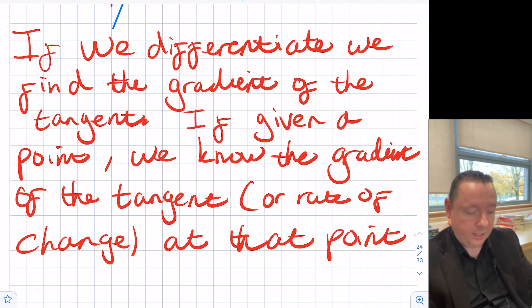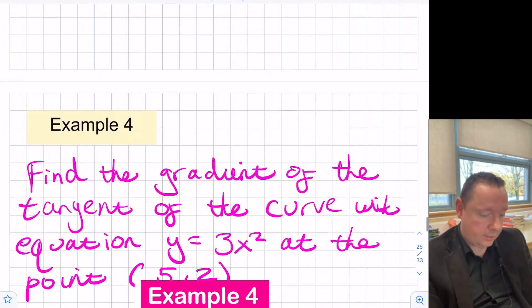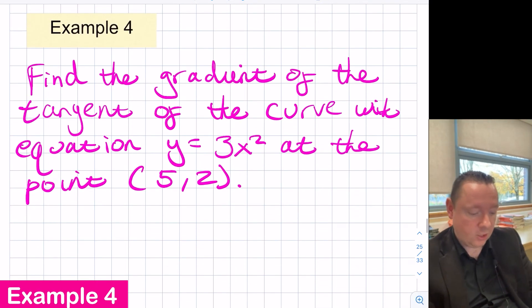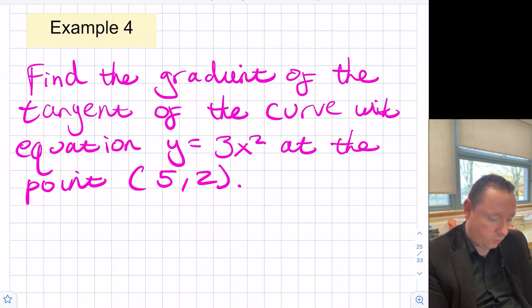If given a point, we know the gradient of the tangent or the rate of change at that point. Example four then says, find the gradient of the tangent of the curve with equation y equals 3x squared at the point five two.